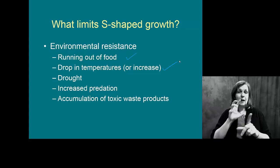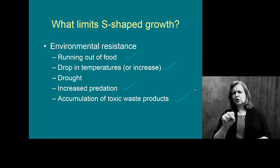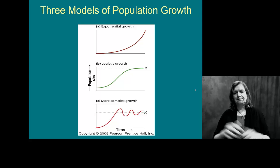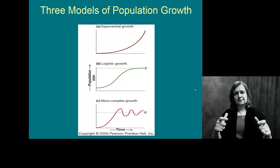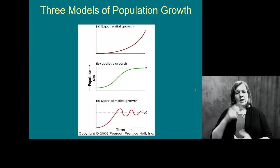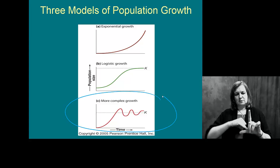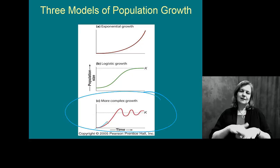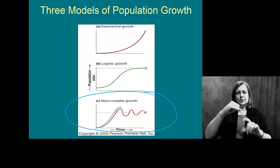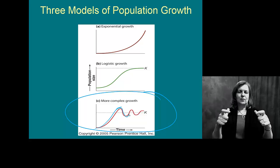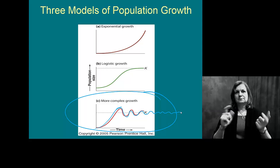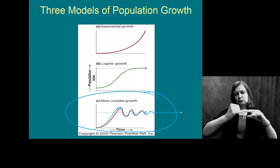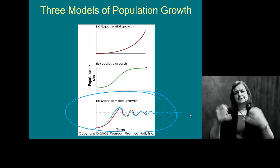Changes in temperature, predation, toxic waste — those sorts of things would certainly limit population growth. We can look at these changes in growth patterns a couple of different ways. Typically, option C at the bottom is the most realistic: you start out growing, something limits you in the environment, your population drops off, and you do this fluctuation around K. Without any significant changes in the population or environment, this is the way it will continue.